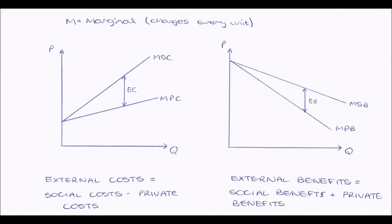On our graph on the left, our two lines sloping upwards represent marginal social cost — the one on top, which is a cost negative externality — and marginal private cost, again a cost negative externality, but this time affecting private individuals and companies, whereas marginal social cost was affecting everybody in society. The gap between those lines — the area between them — is the total external cost.